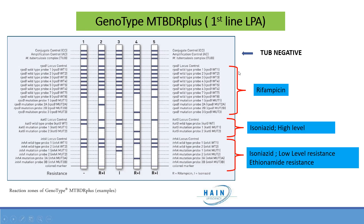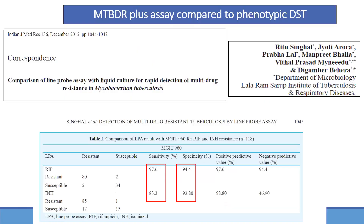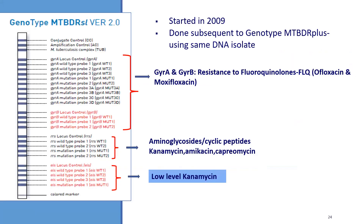First-line LPA, also called the Hain test, covers rifampicin and INH. It also tells you about the presence of TB. The sensitivity of LPA compared to phenotypic DST for rifampicin is 97.6%, but for INH it is only 83%. Specificity for both is approximately 90%.